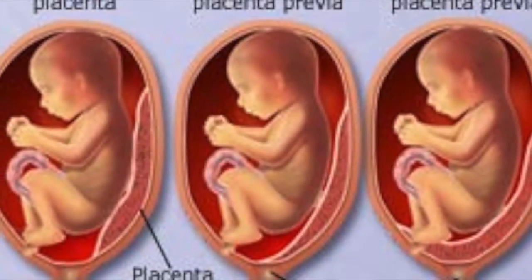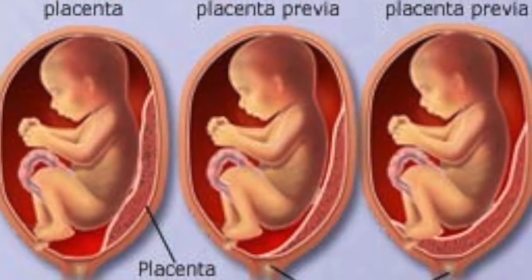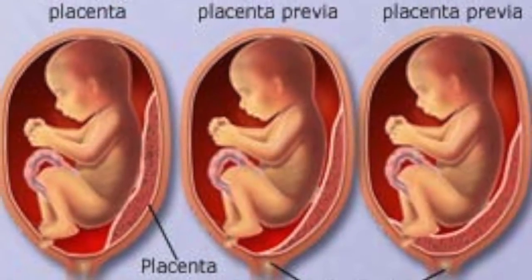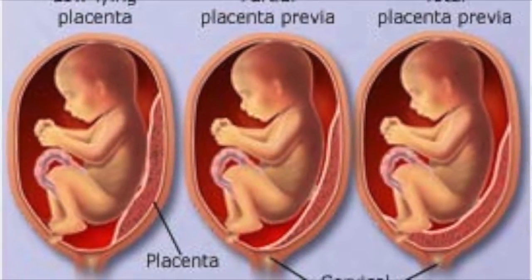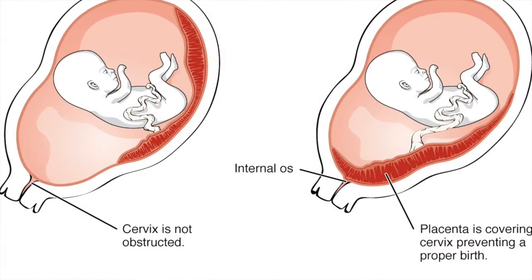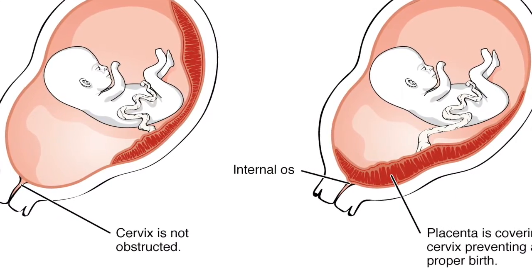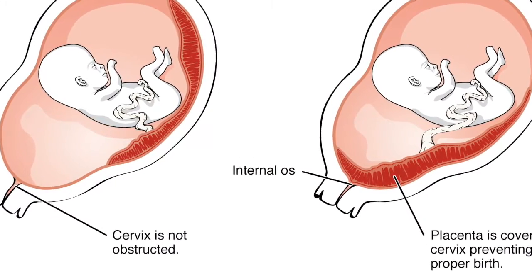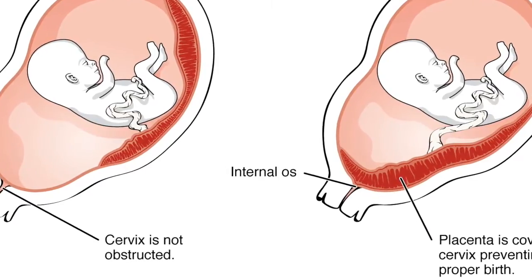The placenta ensures that the blood of the mother and her baby flow past each other but do not mix. If proteins from the embryo enter the mother's circulatory system, her immune system might attack them as foreign invaders. This could end the pregnancy.